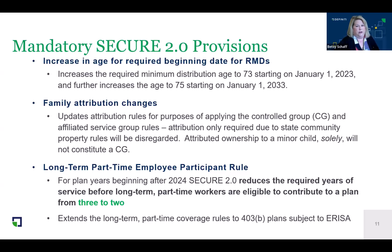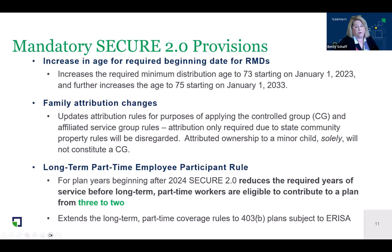One rule getting a lot of attention is the long-term part-time employee rule. Beginning with SECURE 1.0, we needed to start tracking hours for long-term part-time employees — those who work 500 or more hours in a plan year. SECURE 1.0 required three consecutive plan years of 500 hours. SECURE 2.0 reduced that to two consecutive plan years of 500 or more hours, effective for 2024. It also extends the long-term part-time coverage rules to 403(b) plans.